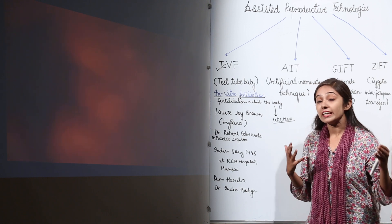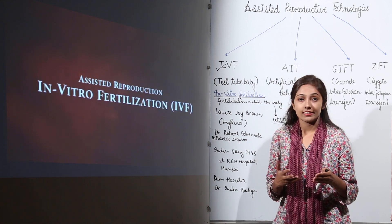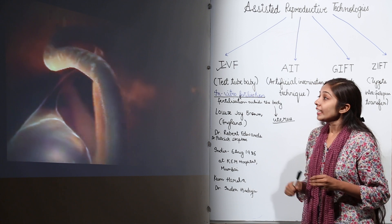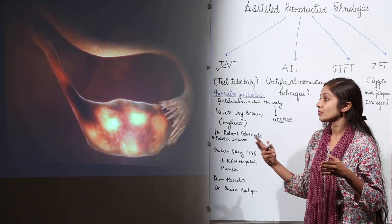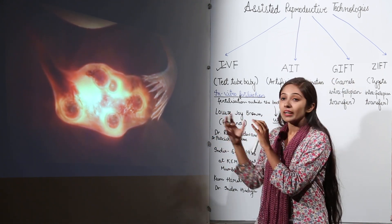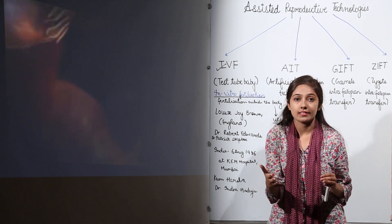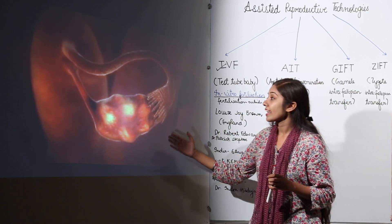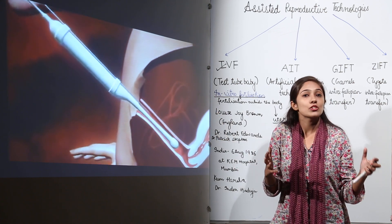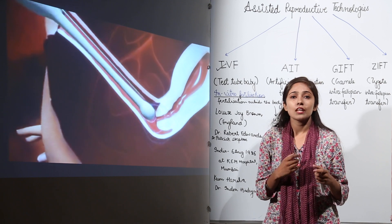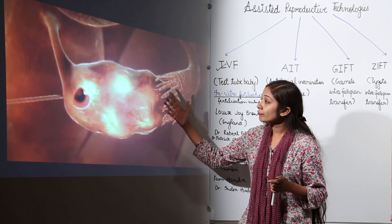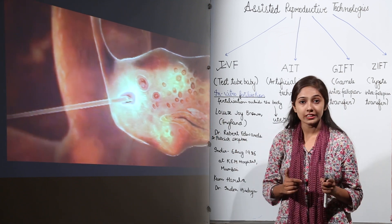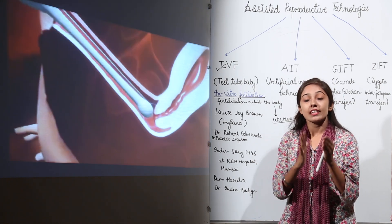Under many situations, this natural process does not happen — there are infertility cases, so we use assisted reproduction. In IVF, the mother is given a lot of reproductive hormones so that many mature eggs form inside the ovaries. The fluid containing those mature eggs is then taken out from the ovaries and transferred into laboratory test tubes.